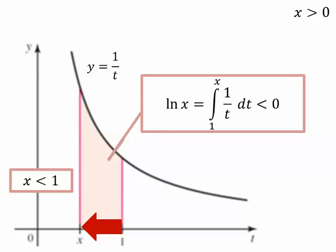If x is less than 1, then the log is negative because our upper bound is to the left of our lower bound.